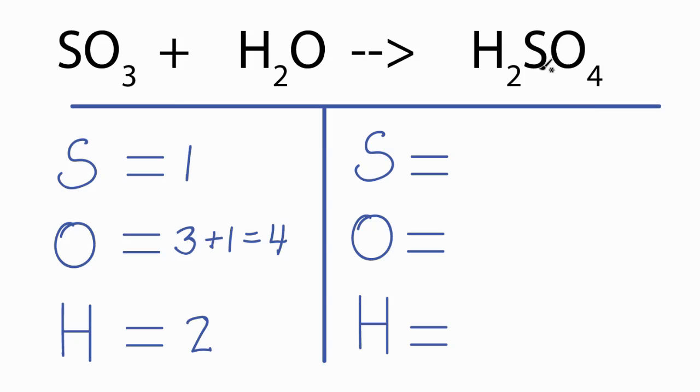On the product side, we have one sulfur, four oxygens, and two hydrogens. And it turns out that this equation's already balanced.